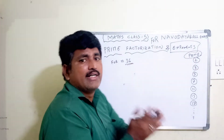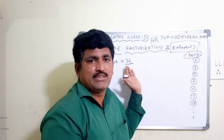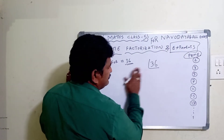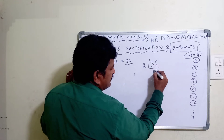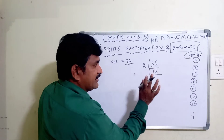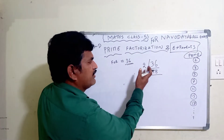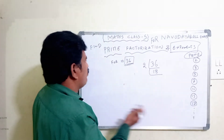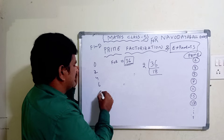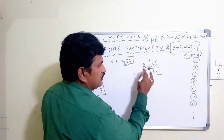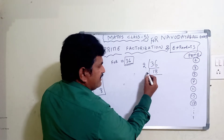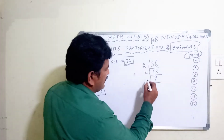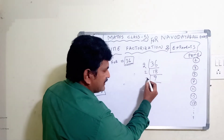We only divide by prime numbers — we don't take 4th, 9th, or 6th; only prime numbers. For prime factorization, let's start with 36. Even numbers are divisible by 2. If the last digit is 0, 2, 4, 6, or 8, it's divisible by 2. So we keep dividing by 2 as long as it's an even number. After dividing by 2 twice we get 9, which is not even, so we switch to dividing by 3.